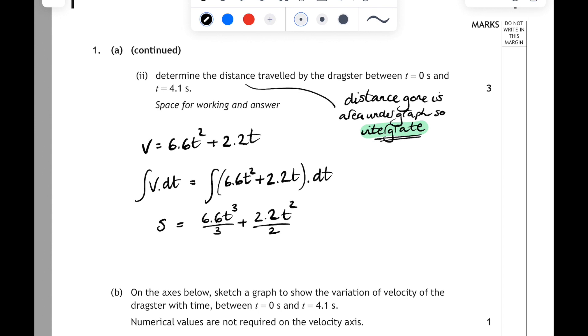So c will be equal to 0. So let's leave that out and simplify and substitute in for t equals 4.1. So 6.6 over 3 is 2.2 times the 4.1 cubed plus 2.2 over 2 is 1.1 times t squared, and t is 4.1. So 4.1 squared, and if you do all of that on your calculator, you get an answer of 170 meters.